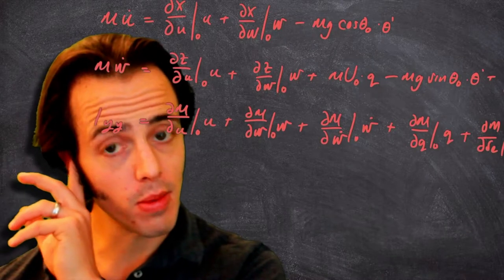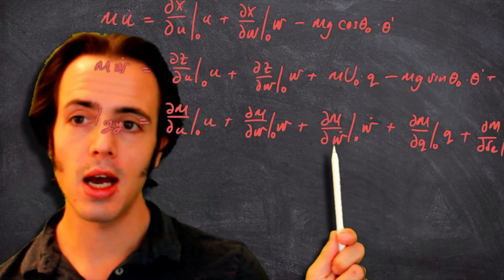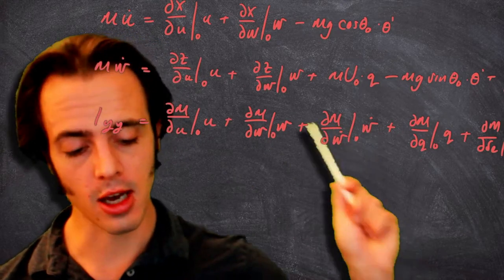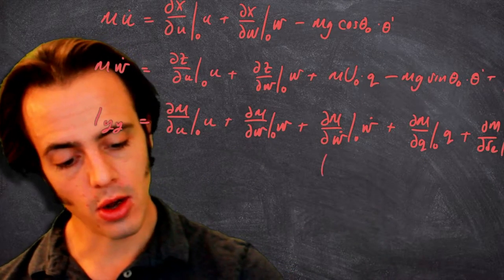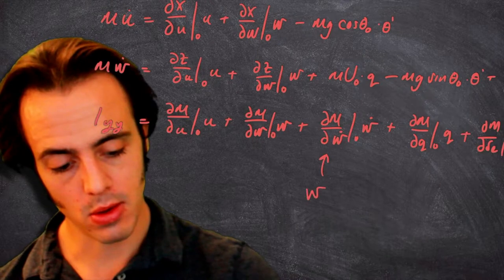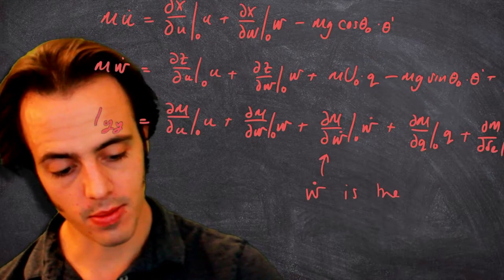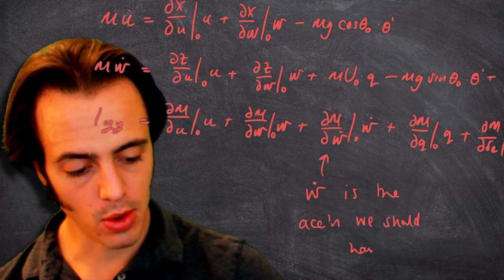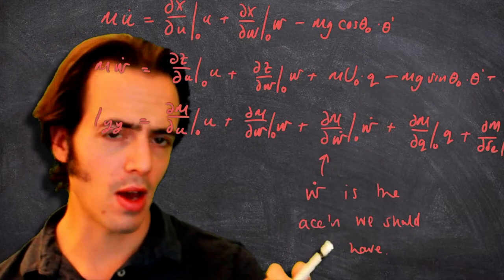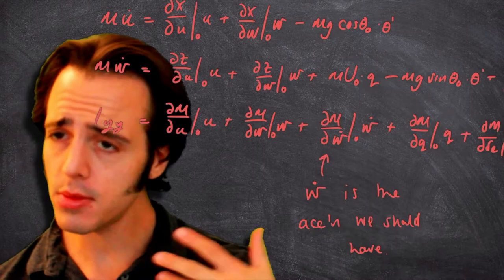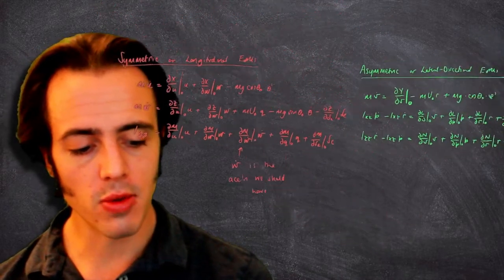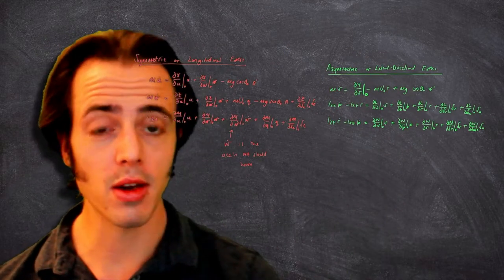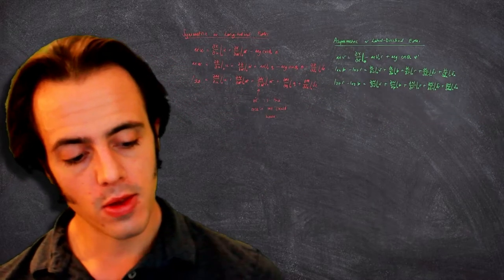I noticed when copying from my crib notes that I had an incorrect term — I had it as u-dot, but the only acceleration we can have is w-dot. So have a look at what you've got; I'll make sure it's corrected in the accompanying notes. You aren't going to be asked to repeat this derivation, but I think it's really important for you to understand where things come from.